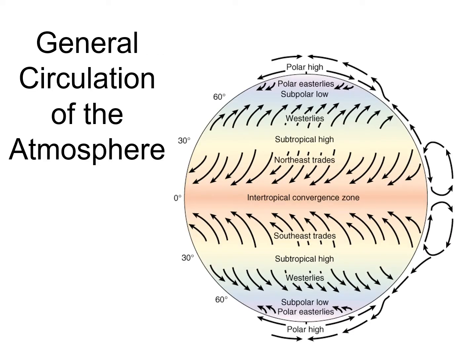As a reminder, we've talked about the pressure zones, such as the ITCZ, or Intertropical Convergent Zone, the Subtropical High, the Subpolar Low, and the Polar High. And we also have the Subtropical High, the Subpolar Low, and the Polar High in the Southern Hemisphere.